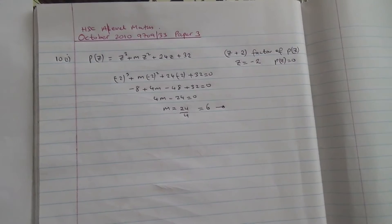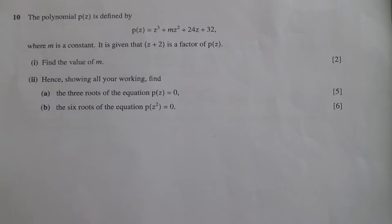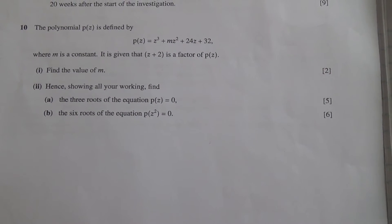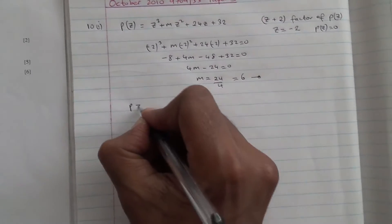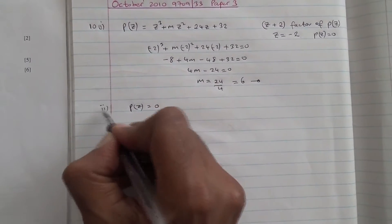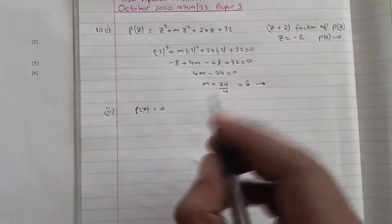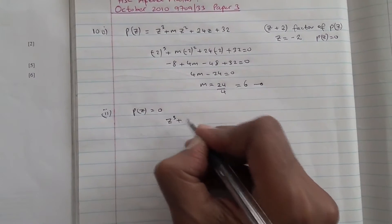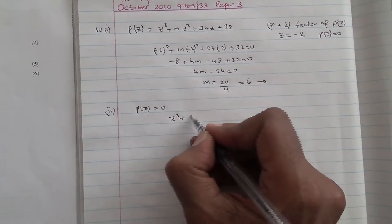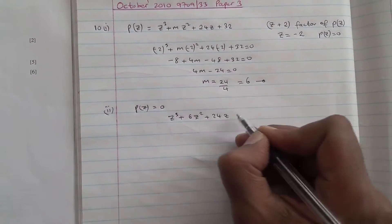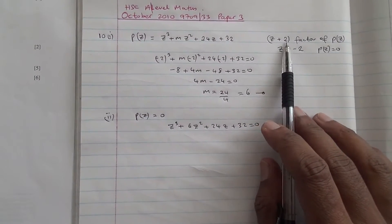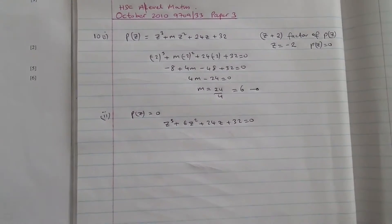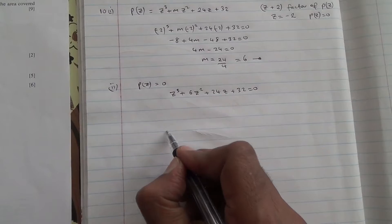First part of the question is done — two marks. For the second part, part A, we need to show all working and find the three roots of the equation P(z) = 0. P(z) = 0 means z³ + 6z² + 24z + 32 = 0. We know z + 2 is a factor, with root z = minus 2. Therefore, we can perform a long division.